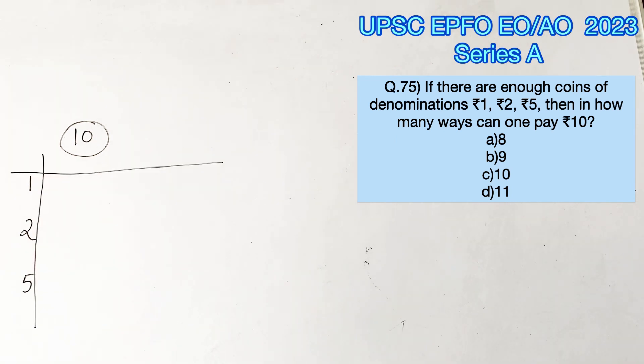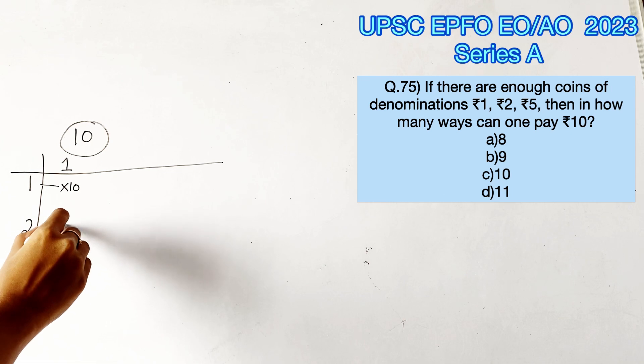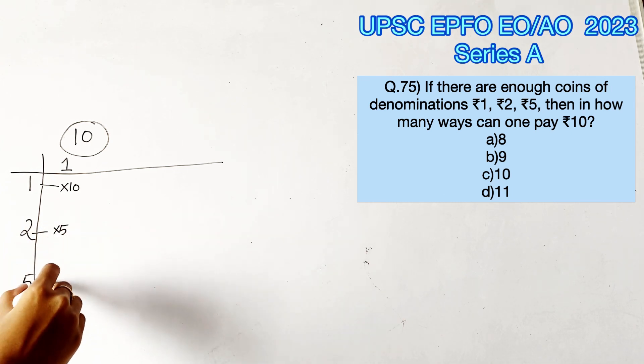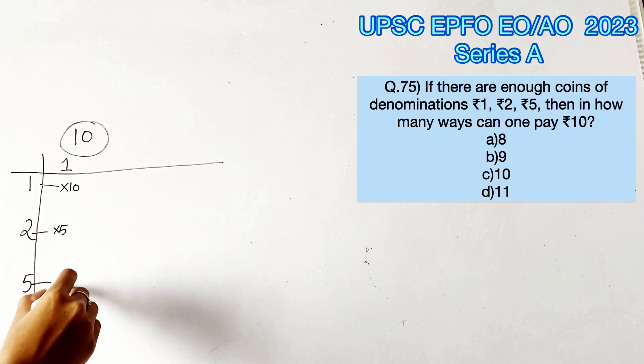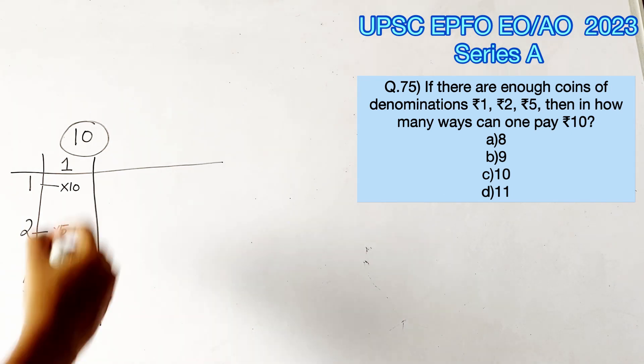Let's take the first possibility where we use only one type of coin. So we can take ten 1-rupee coins, or five 2-rupee coins, or two 5-rupee coins.